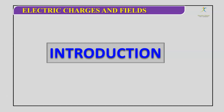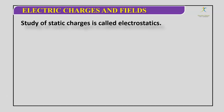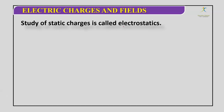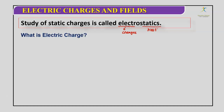We study electric charges and field in the chapter electrostatics. So what is electrostatics? The meaning of electrostatic is the study of static charges. Electrostatics self-defines: 'electro' is related to charges and 'static' means rest. When the charges are at rest, when we study that particular scenario or phenomena, we say this is a part of electrostatics.